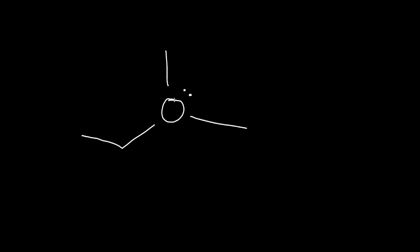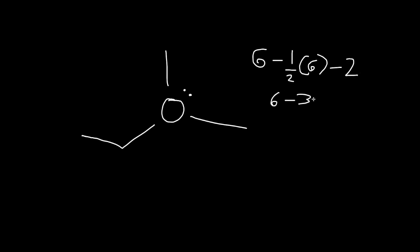To calculate the formal charge for oxygen here: oxygen has six valence electrons, and it's bonded to one, two, three — three bonds, three lines, which is six electrons — minus one lone pair, so two electrons. Half of six is three, so six minus three is three, minus two equals one. So oxygen has a plus charge here.